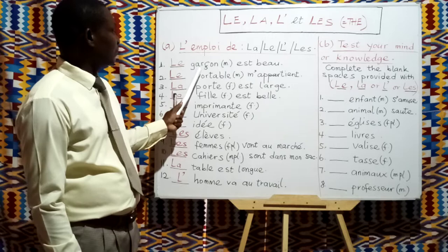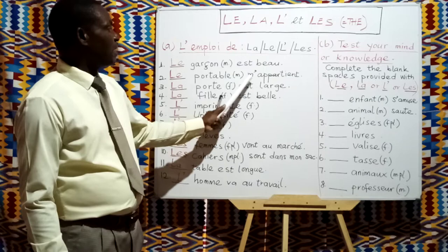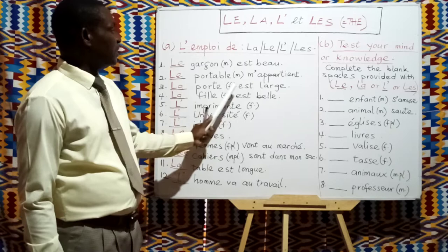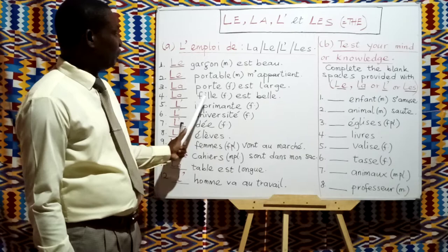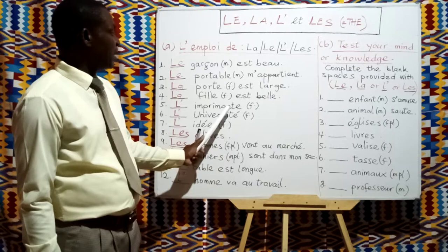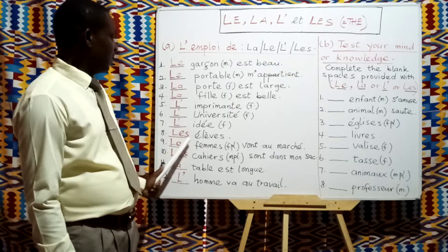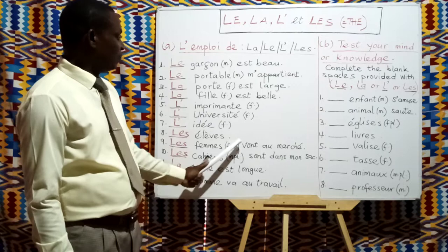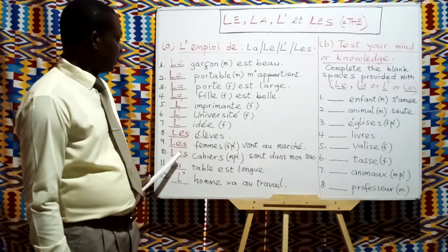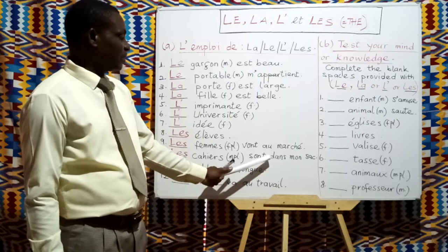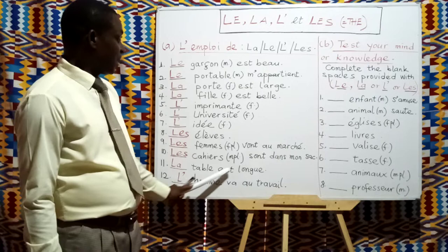On the board we have: Le garçon est beau. Le portable m'a parti. La porte est large. La fille est belle. L'imprimante. L'université. L'idée. Les élèves. Les femmes vont au marché. Les cahiers sont dans mon sac. La table est longue. L'homme va au travail.